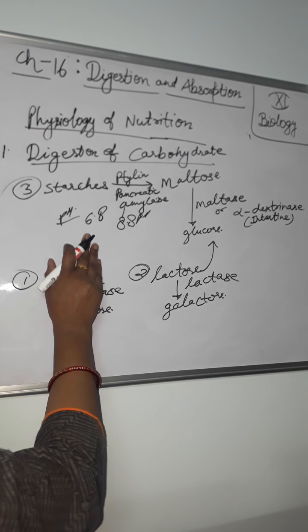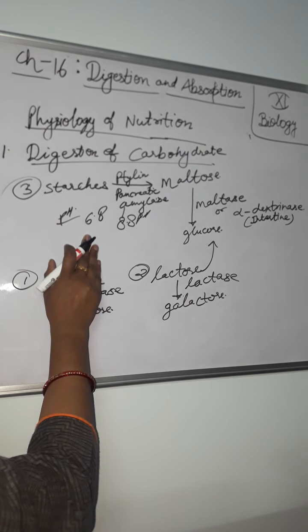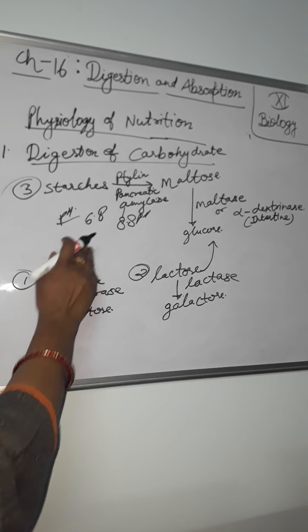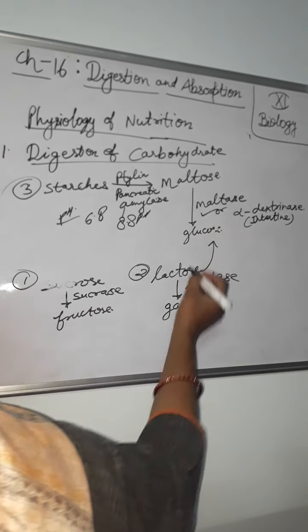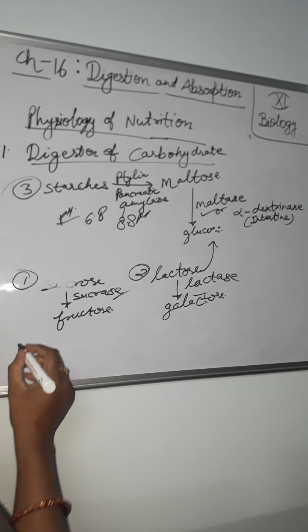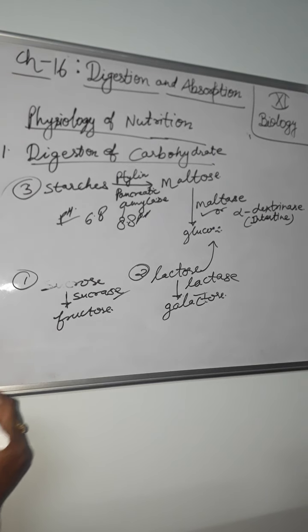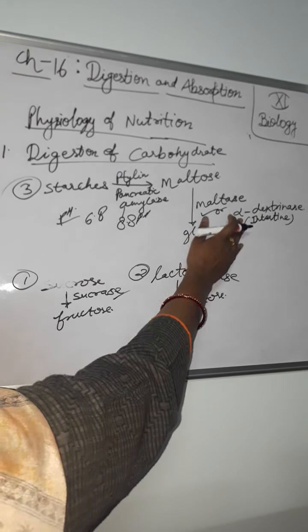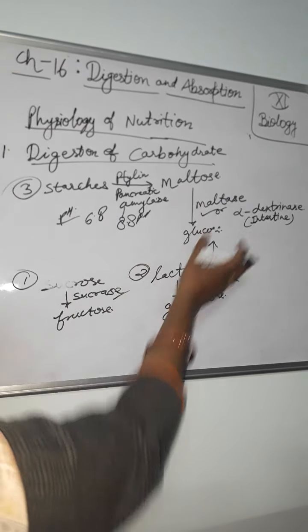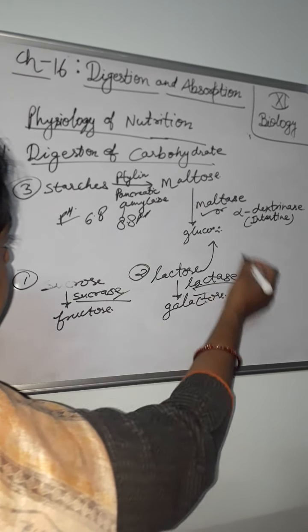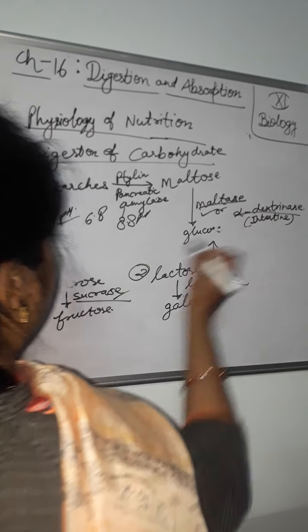Next one - the epithelial cells lining the small intestine secrete four enzymes: maltase, lactase, sucrase and alpha dextrinase. Ye intestine ki wall secrete karti hai - sucrase, lactase, maltase and alpha dextrinase.